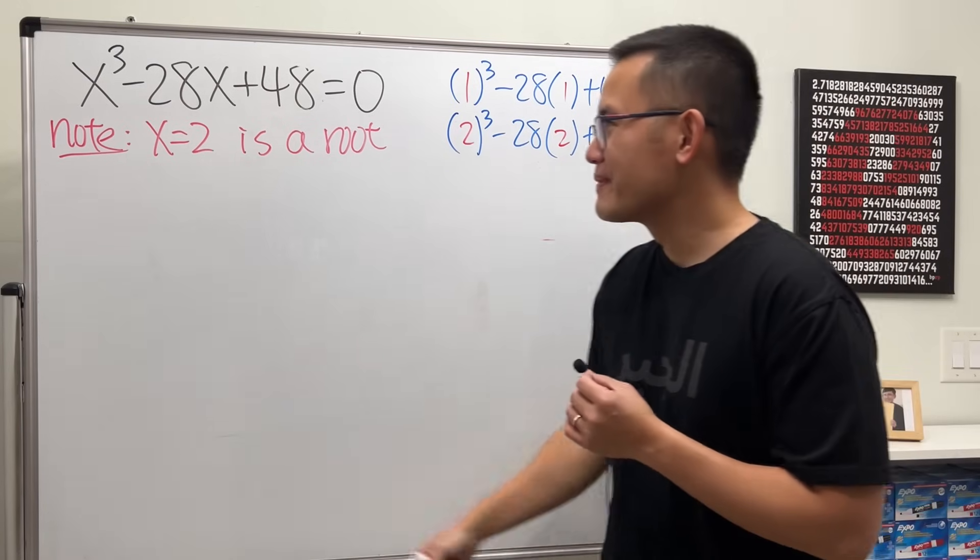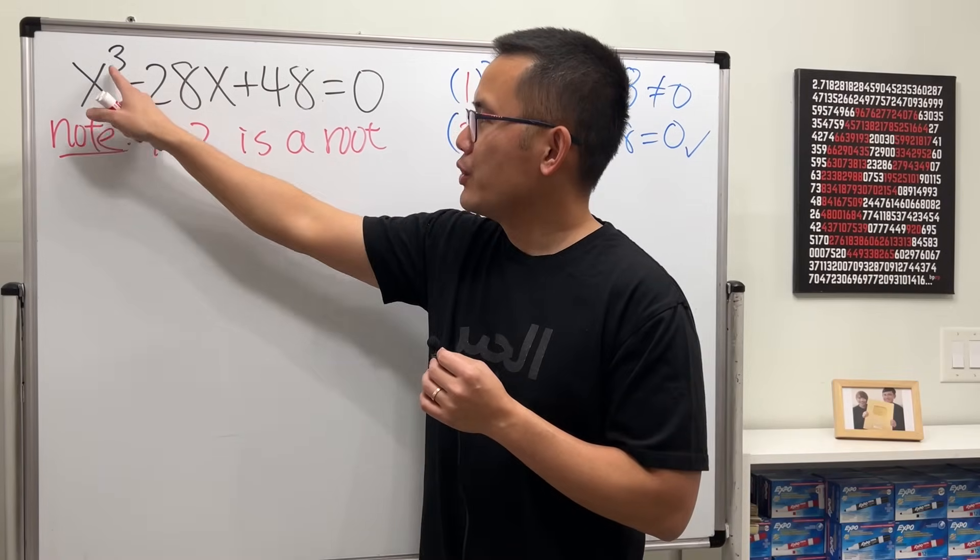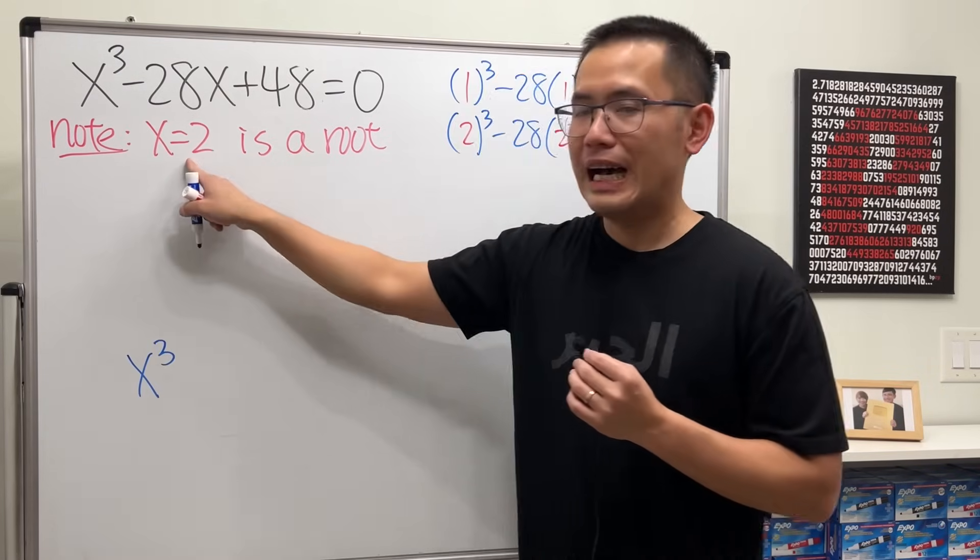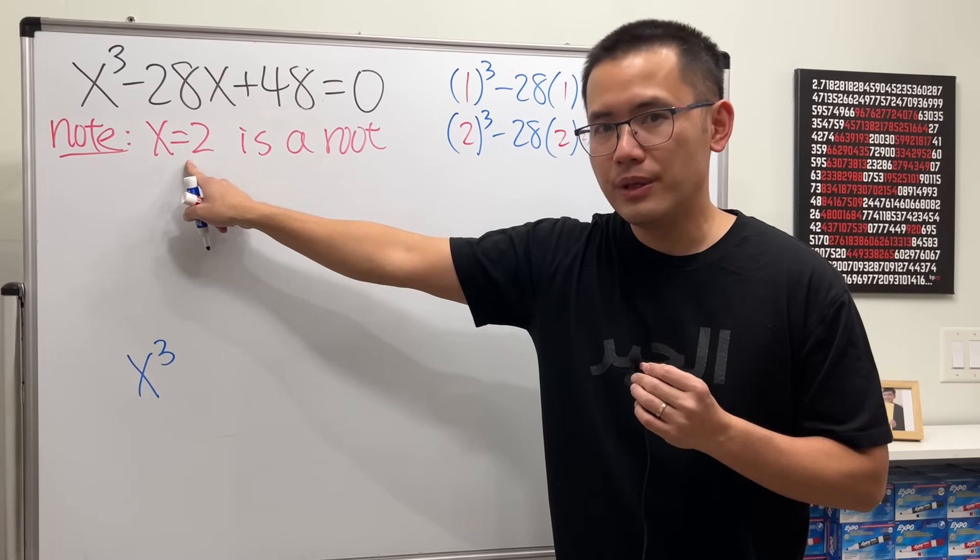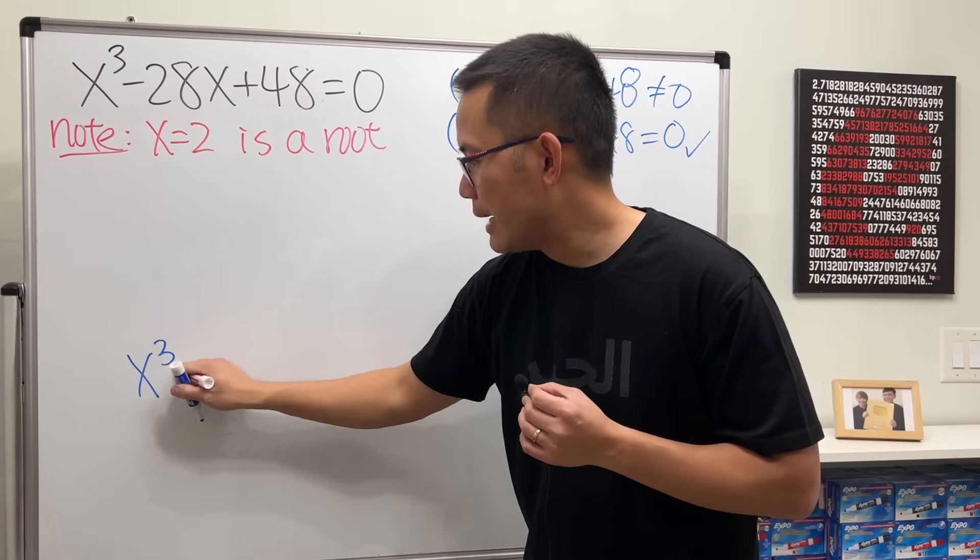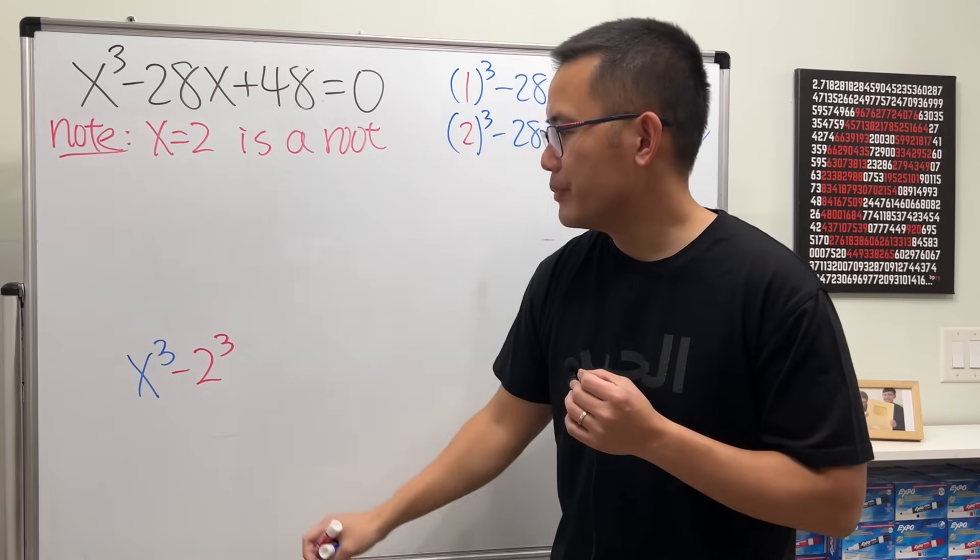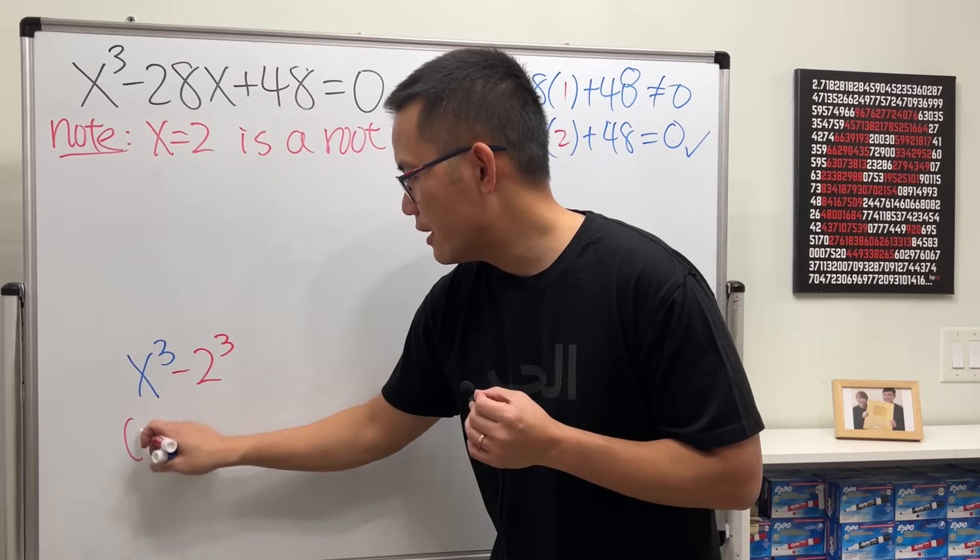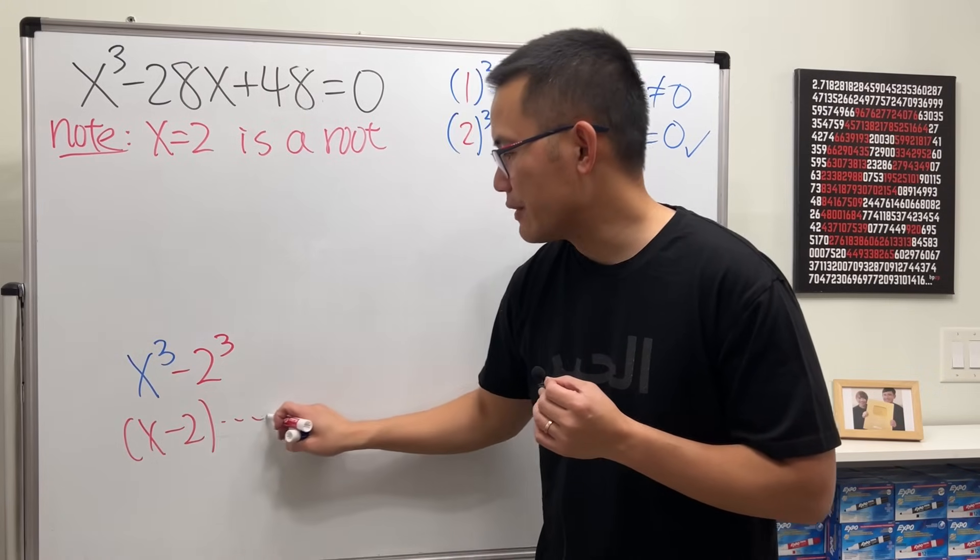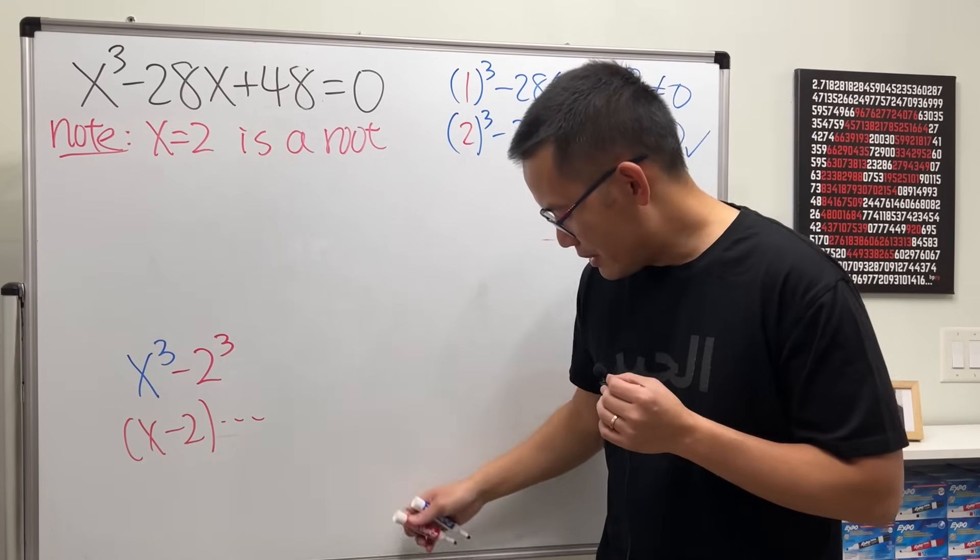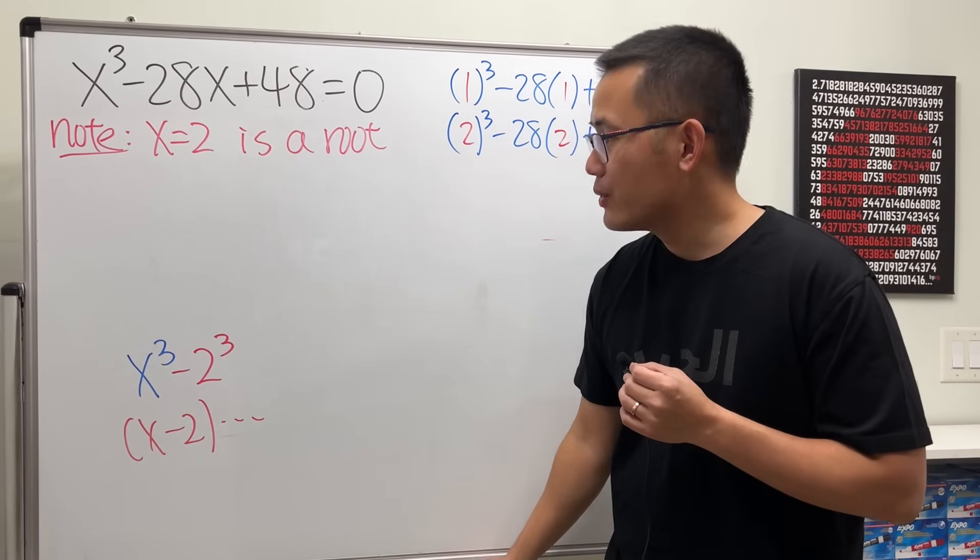Okay, x³, right? That's our leading term. If we have x equals 2 as an answer, then we must somehow produce minus 2³, because when we have difference of two cubes, we can factor it and we get x minus 2 and stuff like that. So with that being said, this is what we are going to do.